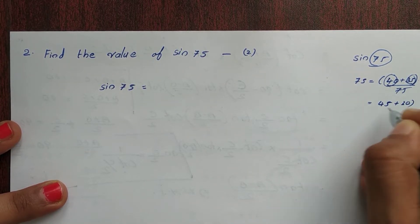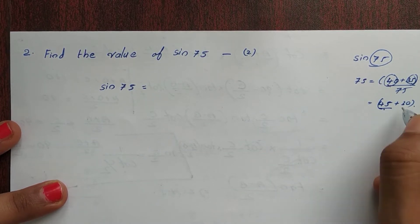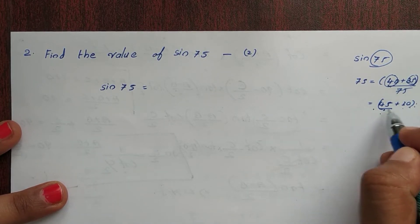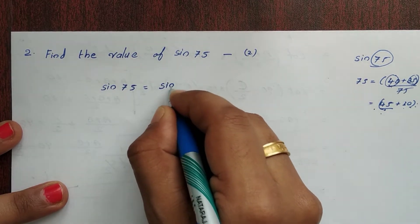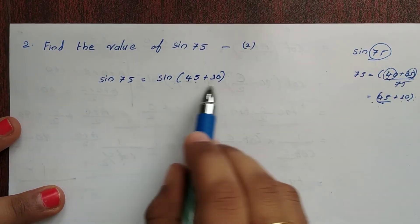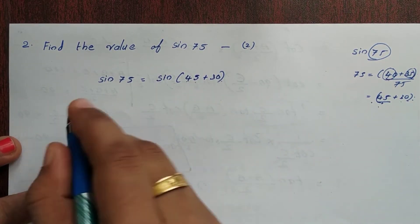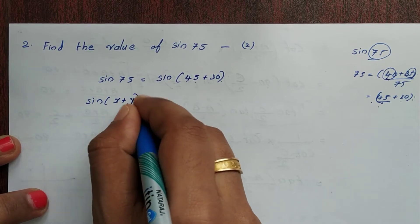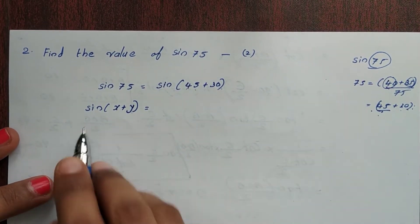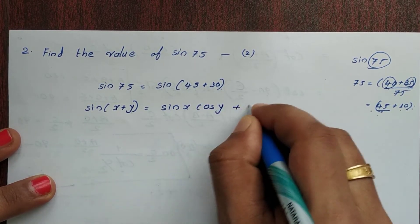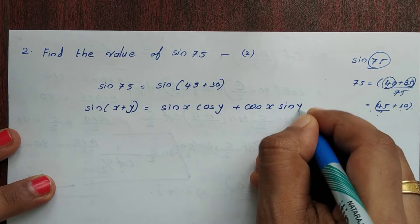We write sin75 as sin(45+30). We then expand using the formula for sin(x+y), which is sin x cos y plus cos x sin y.